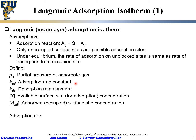The adsorption rate rad equals the adsorption rate constant times the partial pressure of the adsorbate — the higher the pressure, the faster adsorption — times [S], the available site concentration. If the surface is fully occupied, [S] becomes zero and there is no adsorption going on. So the adsorption rate has these three terms multiplied together.